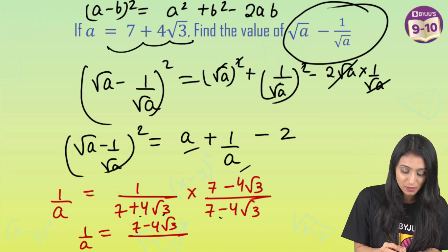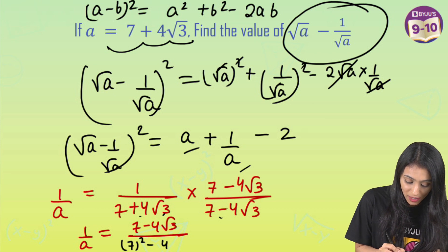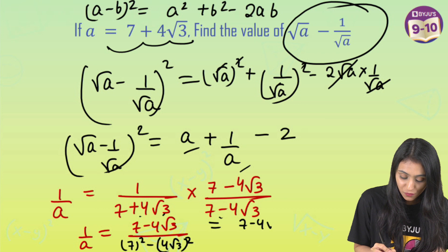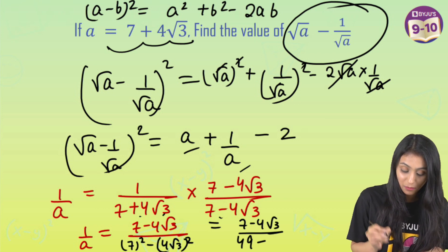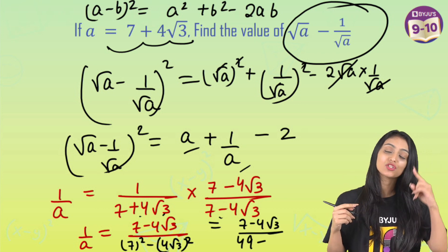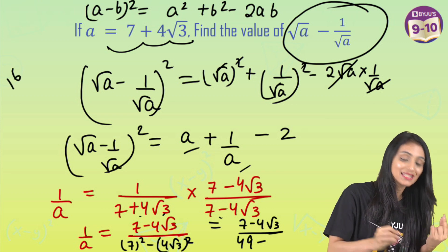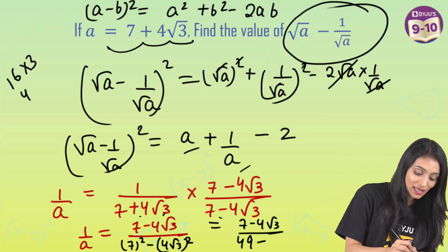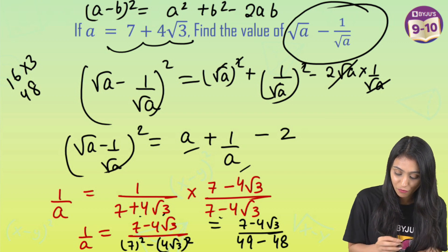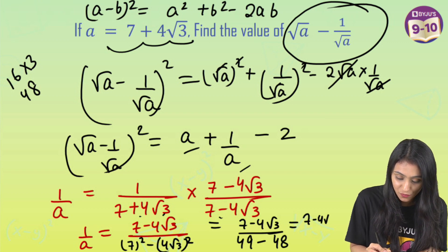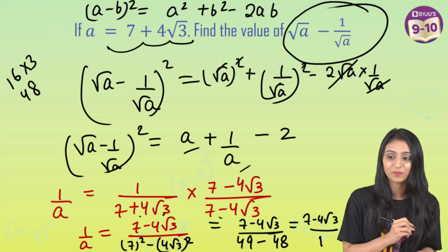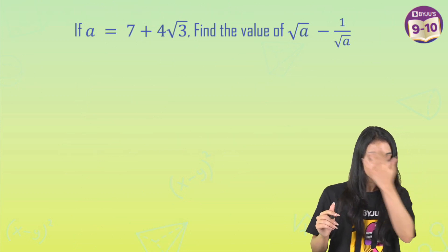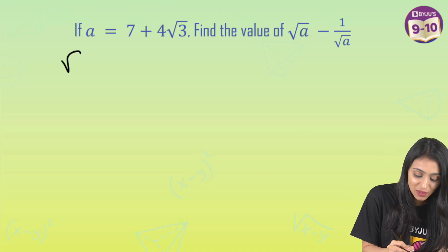(a+b)(a−b) equals a squared minus b squared, so the denominator is 7 squared minus (4 root 3) squared. That gives us 7 minus 4 root 3 upon 49 minus 4 squared times 3. Now, 4 squared is 16 and root 3 squared gives 3, so 16 times 3 is 48. Therefore 49 minus 48 equals 1.